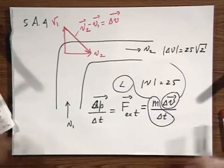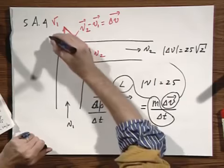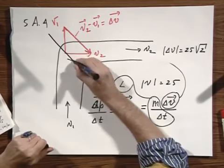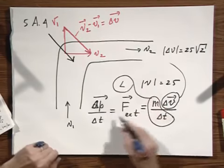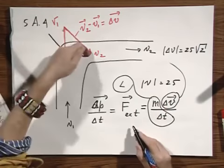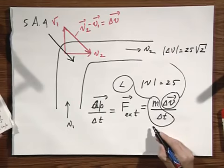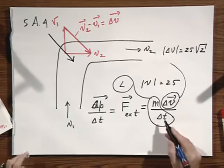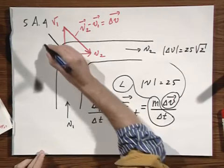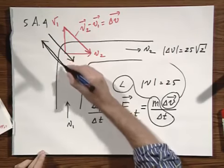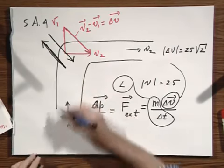So what does it mean? It means that the wall must push on the water in this direction, in the same direction as Delta P, and you can calculate the force. Since action equals minus reaction, the water will push back on the wall in exactly the opposite direction but the same magnitude.